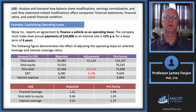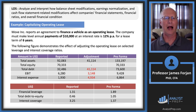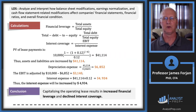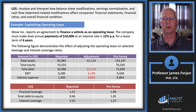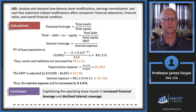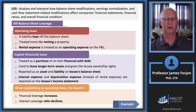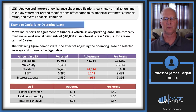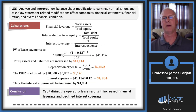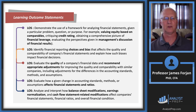The LOS says to analyze and interpret how those balance sheet modifications impact the financial statements. Be prepared, since these are simple calculations, to complete a table. The conclusion: capitalizing the operating lease results in increased financial leverage and declining interest coverage. We said that earlier, and we just proved it mathematically. That takes us through those five LOSs. Divide your time equally across this reading.